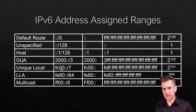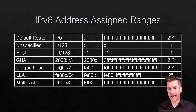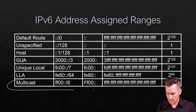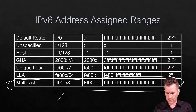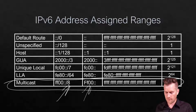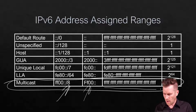In the last video, we went over the different types of addresses, and one of those was the multicast address. The range that we have is anywhere from FF00:: to all Fs, and we're going to take a further in-depth look into this.